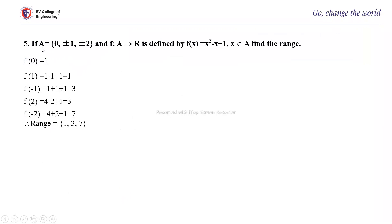Again, A = {0, ±1, ±2} and F: A to R defined by f(x) = x³ - x + 1, x belonging to A. Find the range. f(0) = 1, f(1) = 1, f(-1) = -1+1+1 = wait — f(-1) = -1+1+1. So the range is {1, 3, 7}, the domain is the set A, and the co-domain is the set R of real numbers.